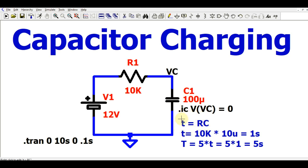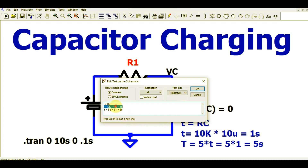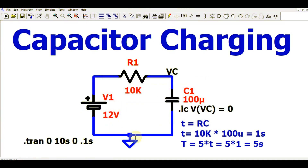As you already know, the time constant for an RC circuit is given by T equals RC. So with R equals 10k and C equals 100 microfarads, your time constant T equals 1 second.